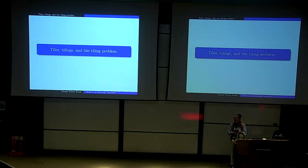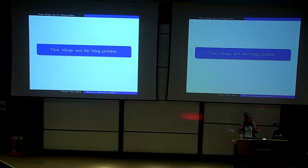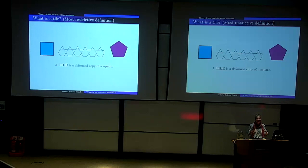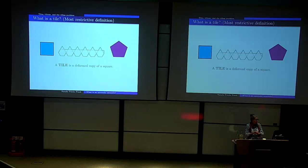I'm very open to questions — just shout things out as we go along. So: tiles, tilings, and the tiling problem. What is a tile? The most restrictive definition of a tile is a deformed copy of a square. So if you're a manufacturer of ceramic tiles for kitchens or bathrooms, that's the definition for you. I have three examples here: a pentagon, a jagged shape, and an actual square.